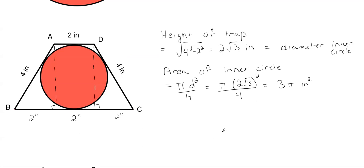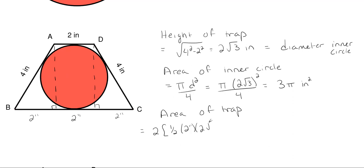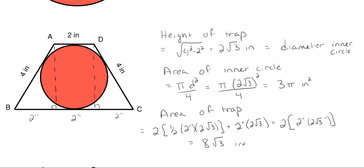Now let's find the area of the trapezoid, because we'll need to subtract it from the total area of the larger circle. The area of the trapezoid equals the area of the two right triangles plus the central rectangle: two times (one-half × two inches × 2√3 inches) plus two inches × 2√3 inches. This boils down to two times two inches times 2√3 inches, giving an overall area of eight square root of three inches squared.